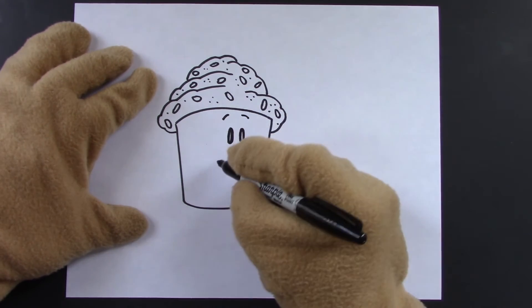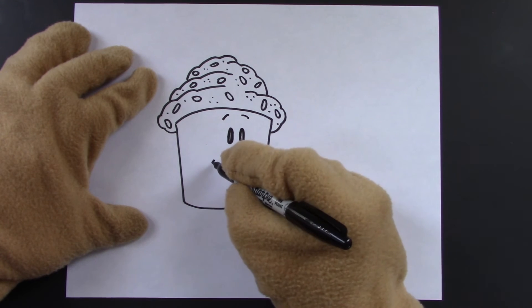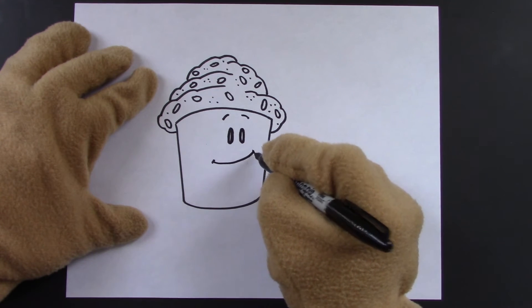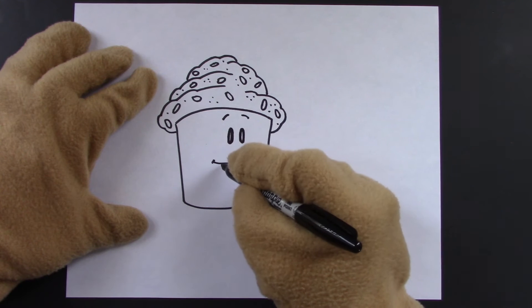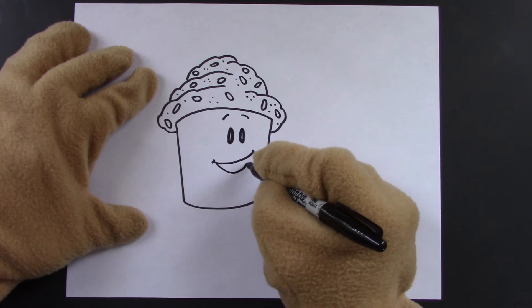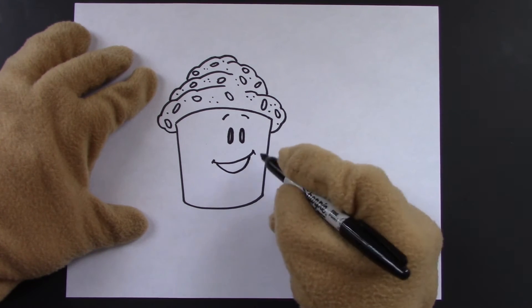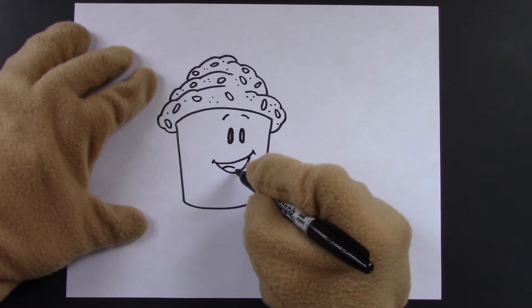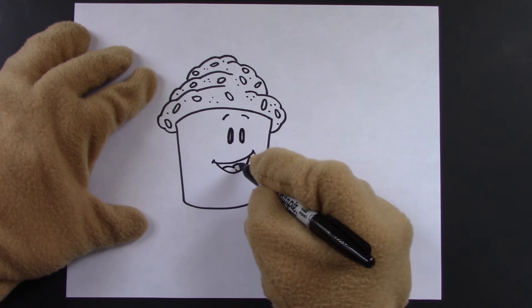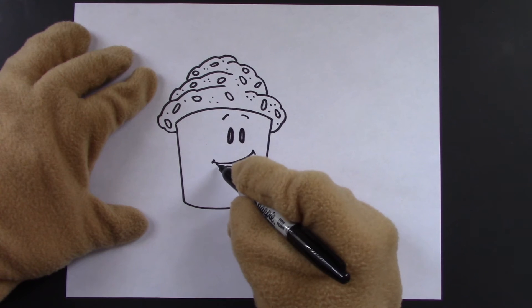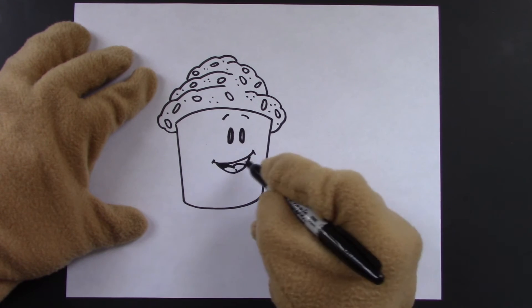And then we'll just add two eyebrows. And a big happy mouth. Now the bottom line, I usually just curve it, but don't take it all the way to the end. And then a curve. And another curve for the top. And we'll color in the rest of it black.